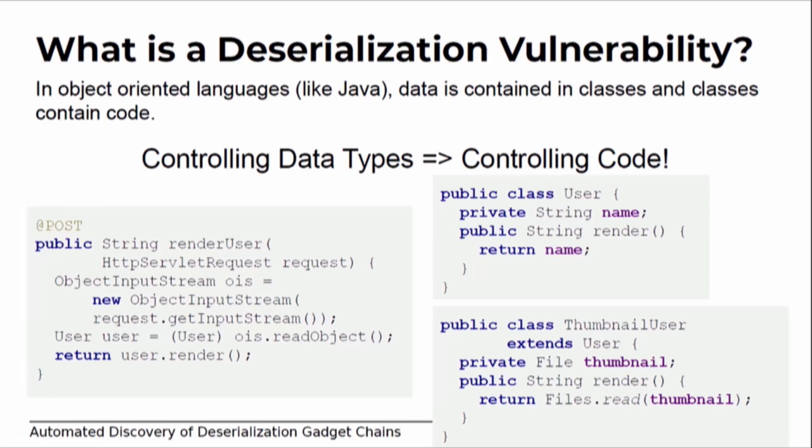But where you start getting into dangerous territory is if maybe you had something like a ThumbnailUser on your class path. It extends user, and the intent is that there's a member specifying a file path with the thumbnail. When you call render, it reads that file from disk. So if an attacker sends a ThumbnailUser to this endpoint instead of a regular user, when it calls user.render, they can read any file from disk. That's what I mean by controlling data types means controlling what code gets executed.